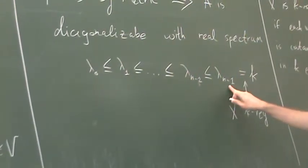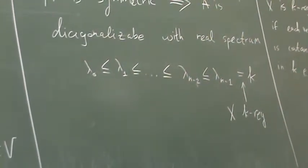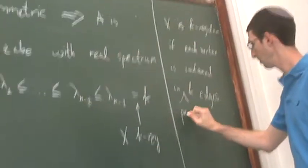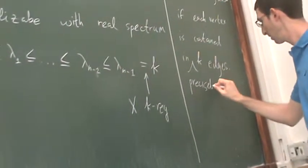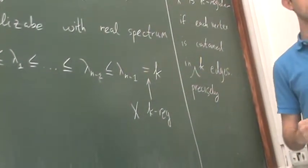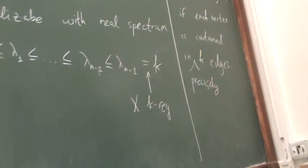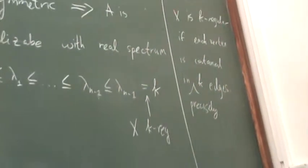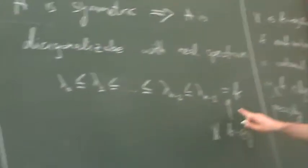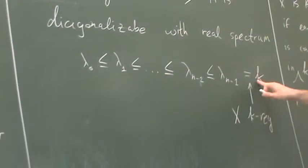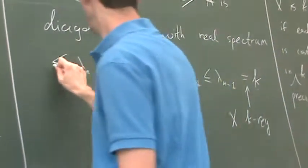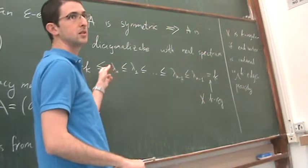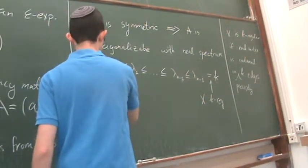When we say X is k-regular, this means precisely k neighbors for each vertex. We will often assume this condition - regular graphs are usually the most interesting. For a k-regular graph, the top eigenvalue is k and the smallest eigenvalue cannot be less than -k.